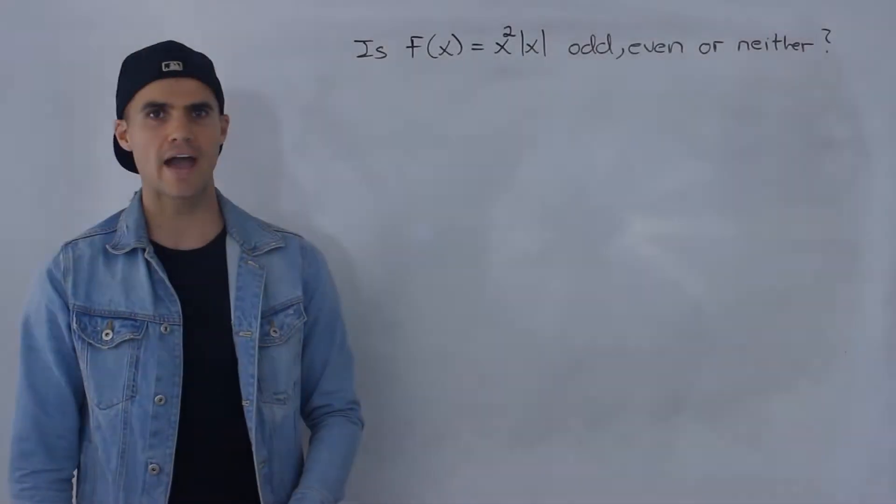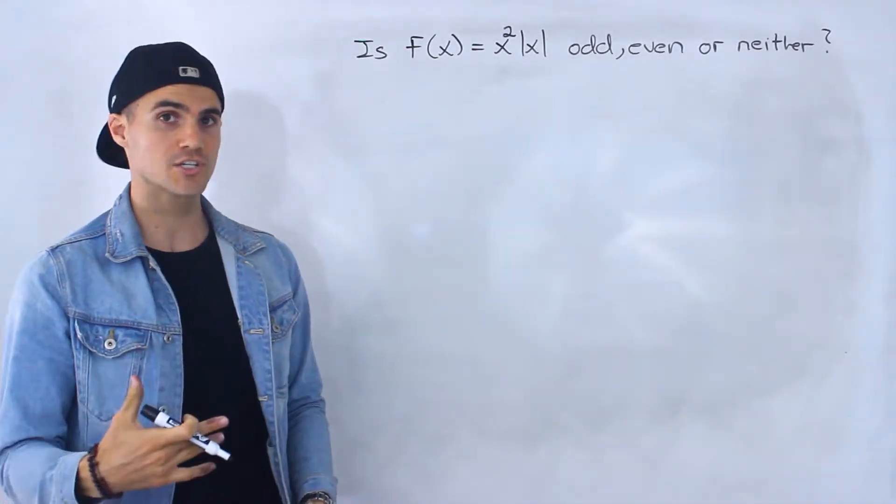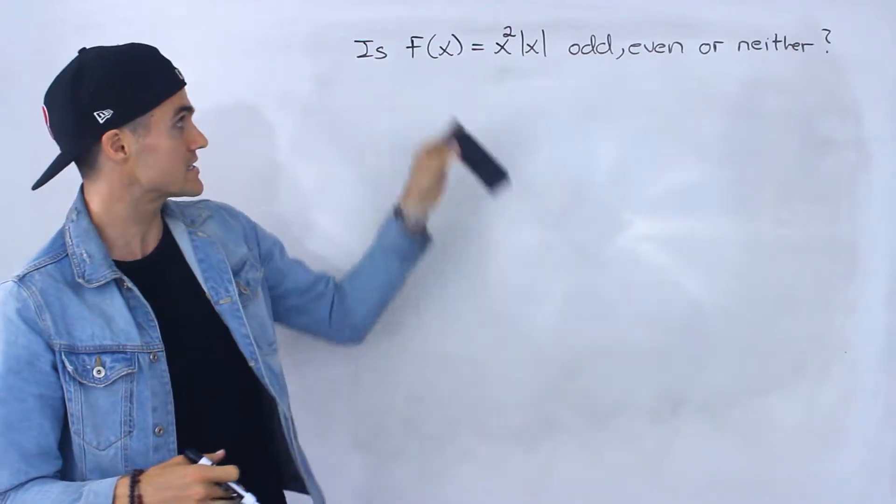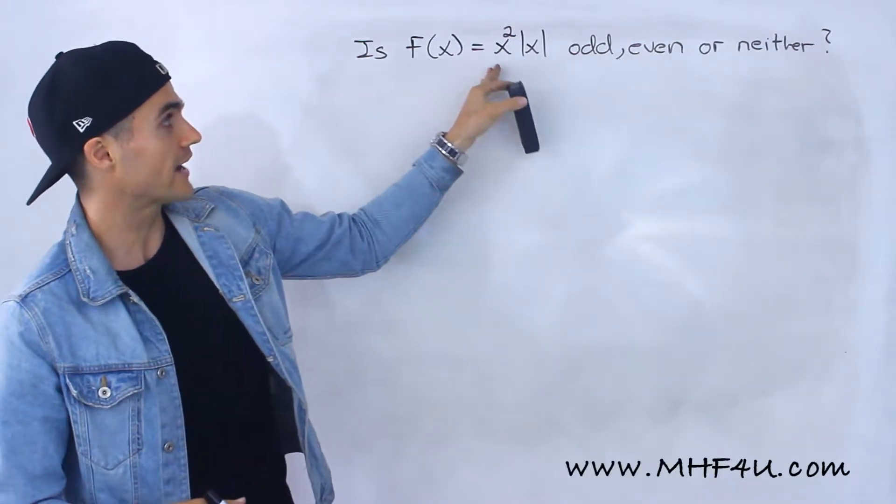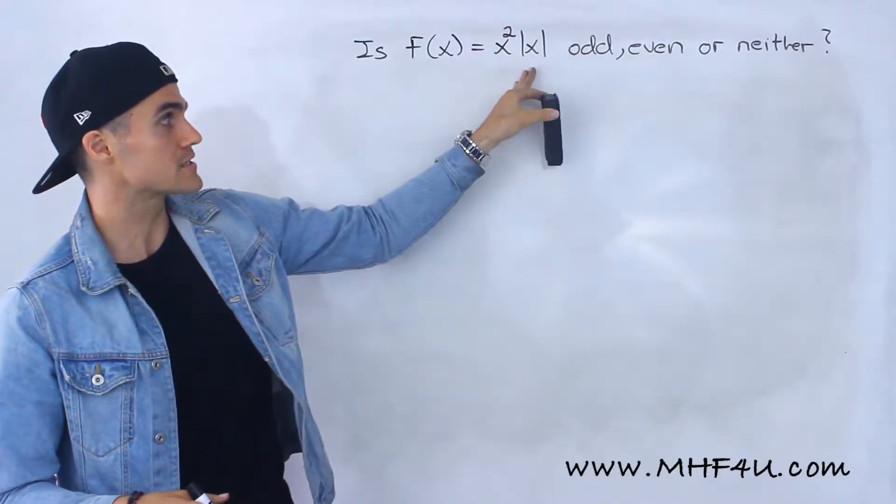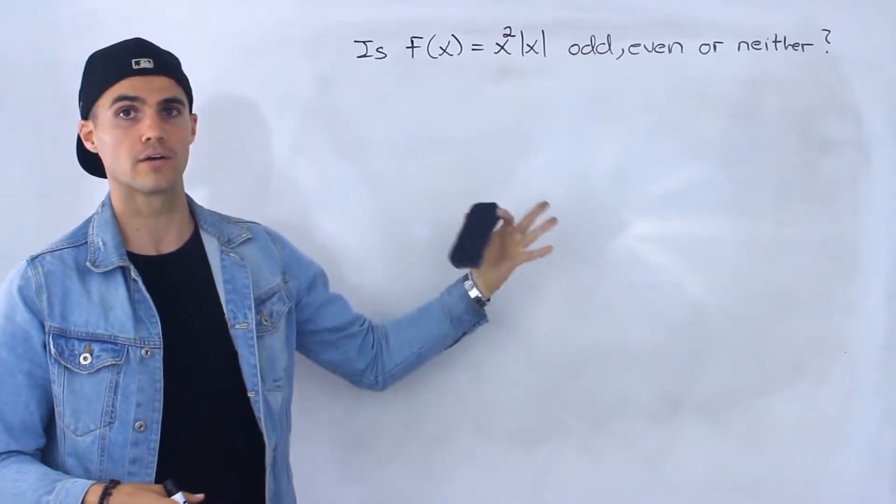Yo, what's up guys? Patrick here. Welcome back. In this question, another question dealing with symmetry, we got to state whether this function, x squared times absolute value x, is odd, even or neither.